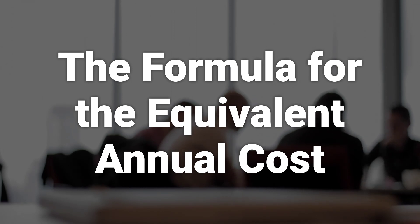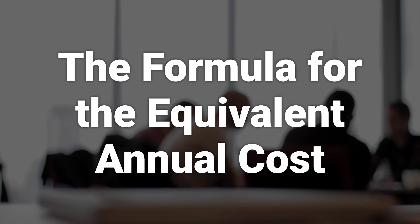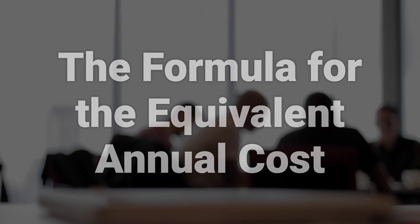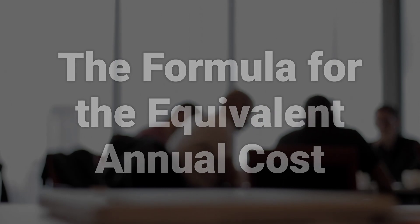The EAC formula is: EAC equals NPV divided by [1 - (1 + discount rate)^(-n)], where n is the number of periods.